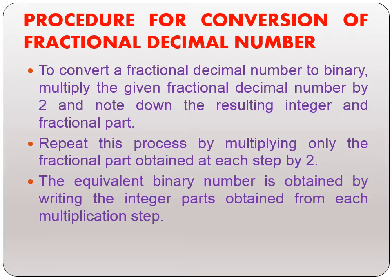In the case of a decimal fractional number, we will multiply it by 2 and note down the resulting integer part and the fractional part. We will multiply the decimal fractional number by 2, and if you get 0 in the fractional part you stop.